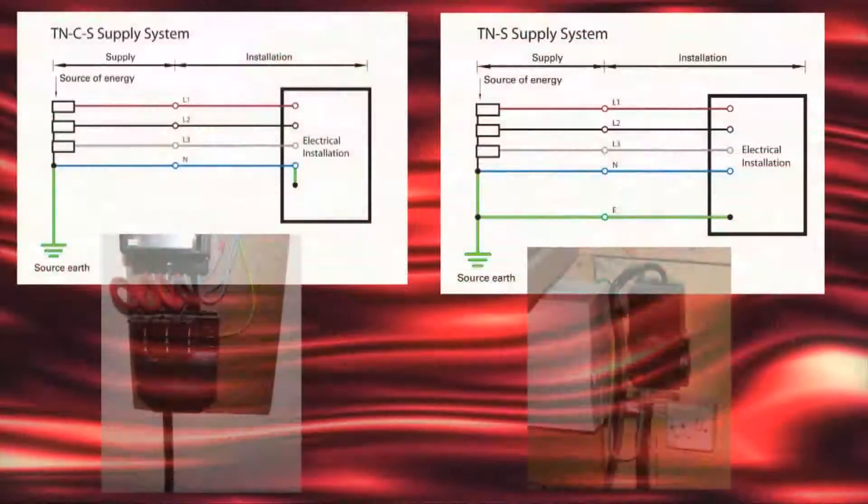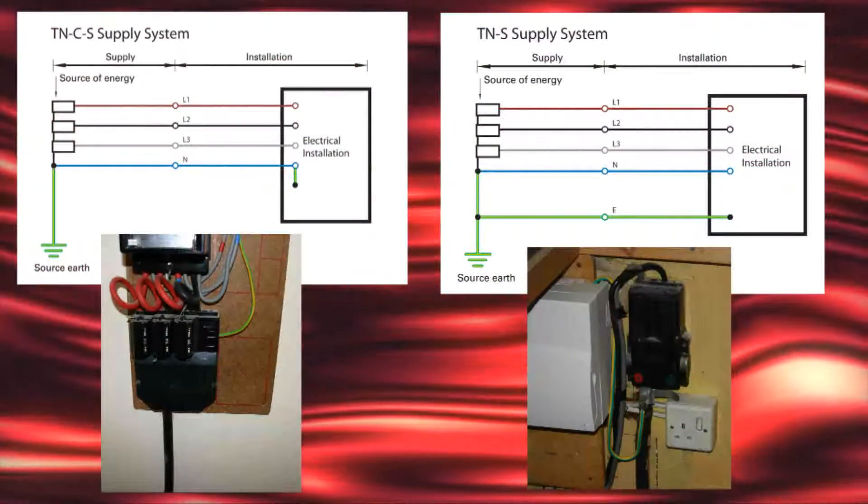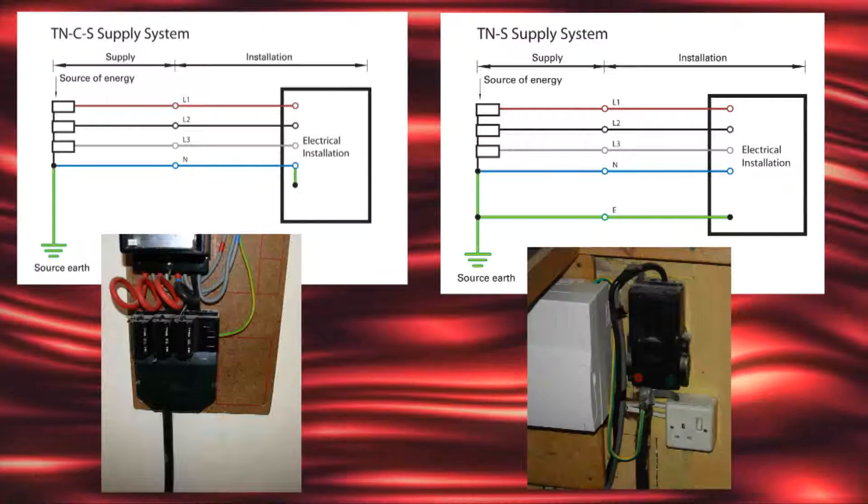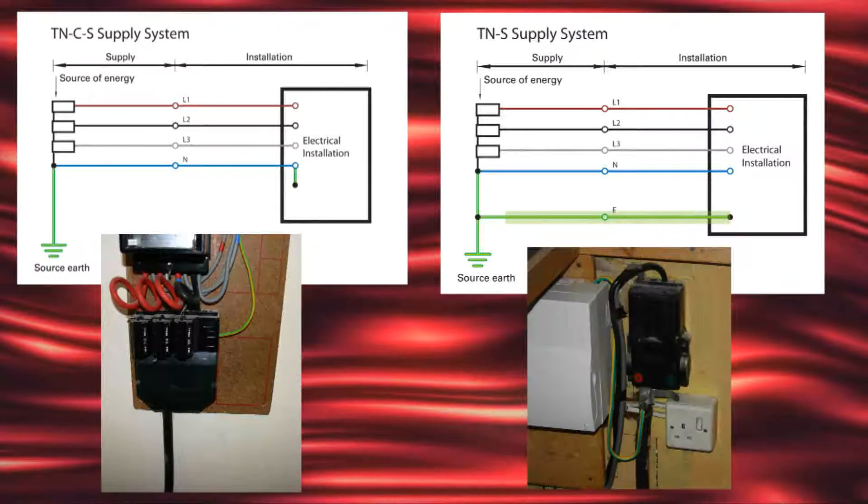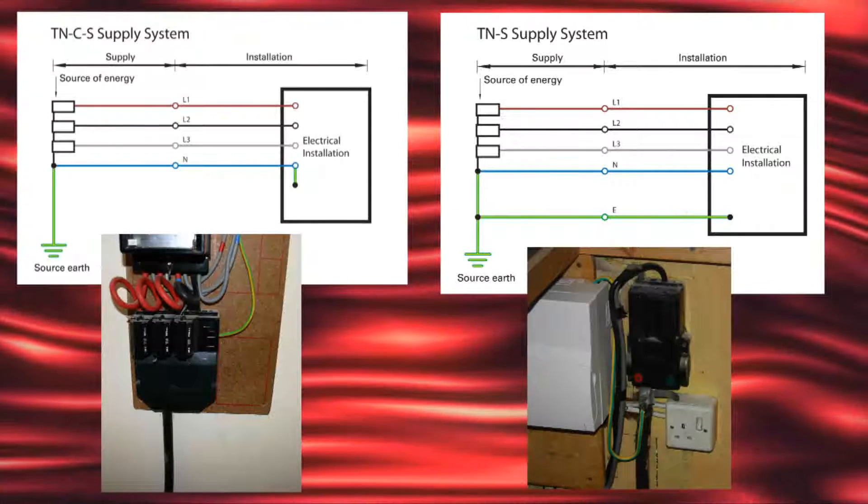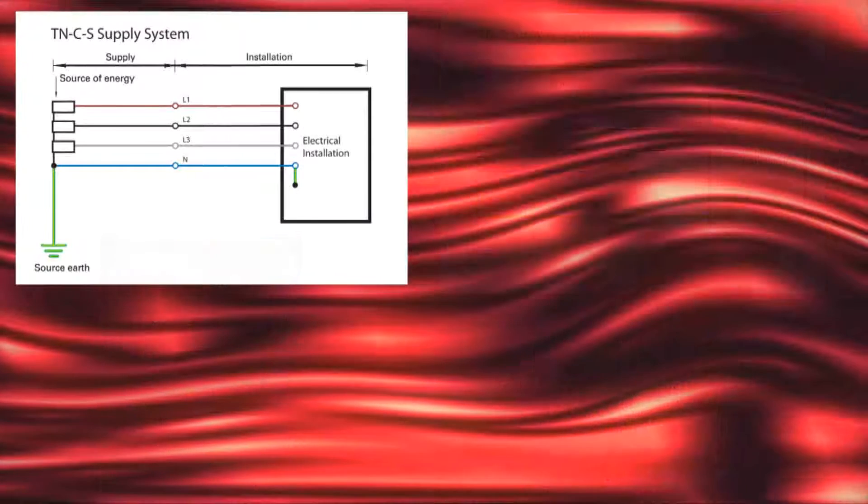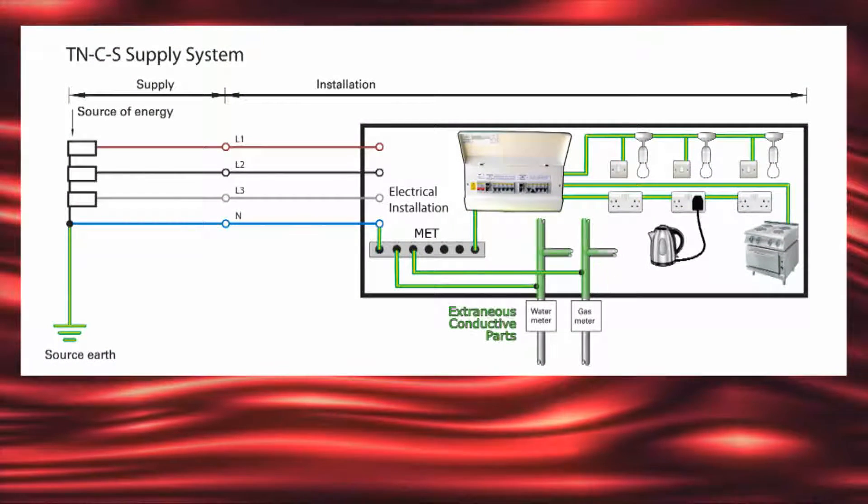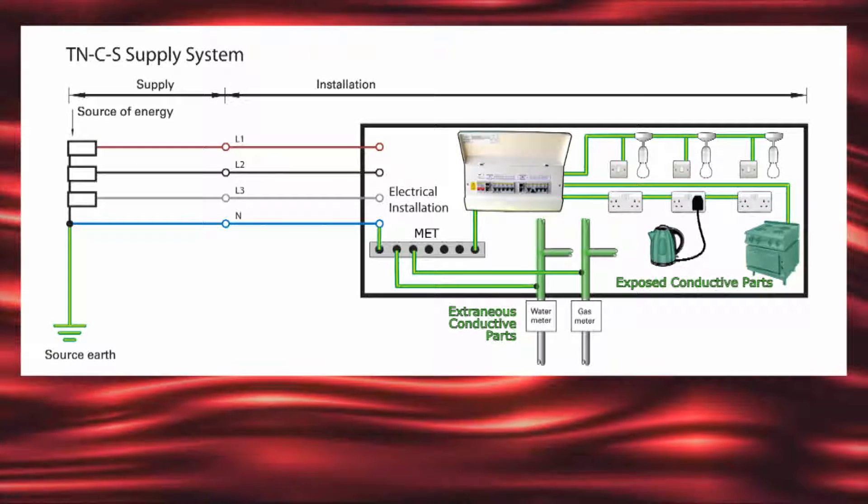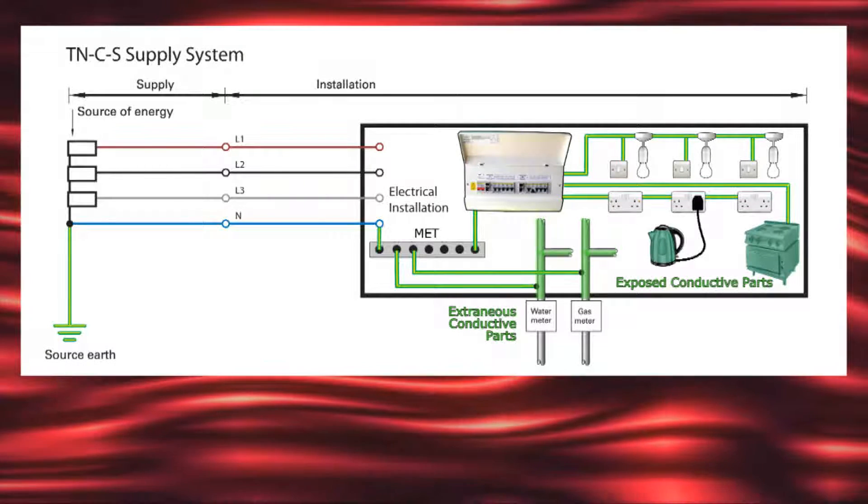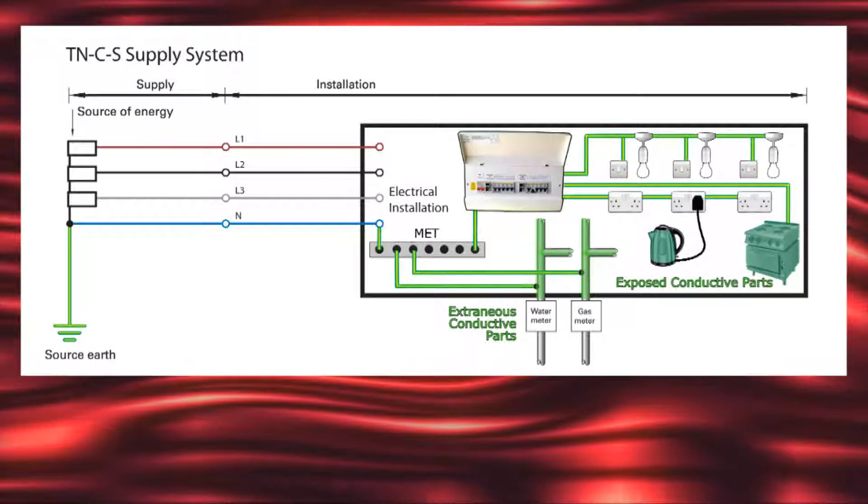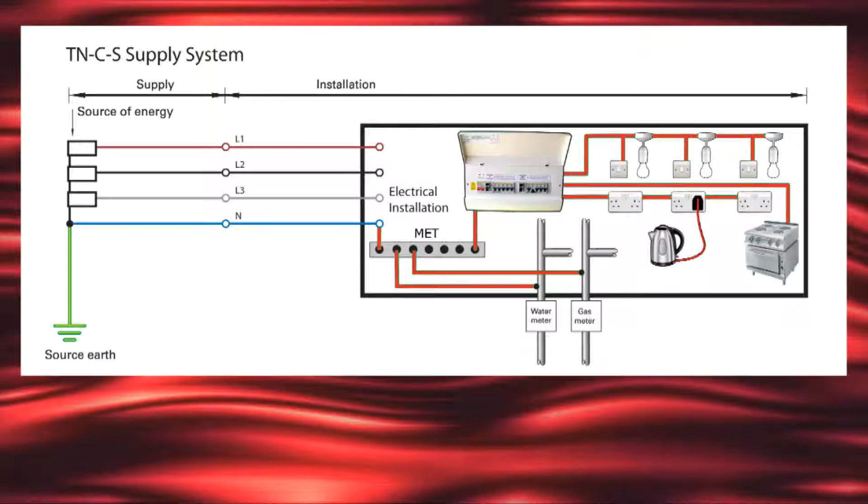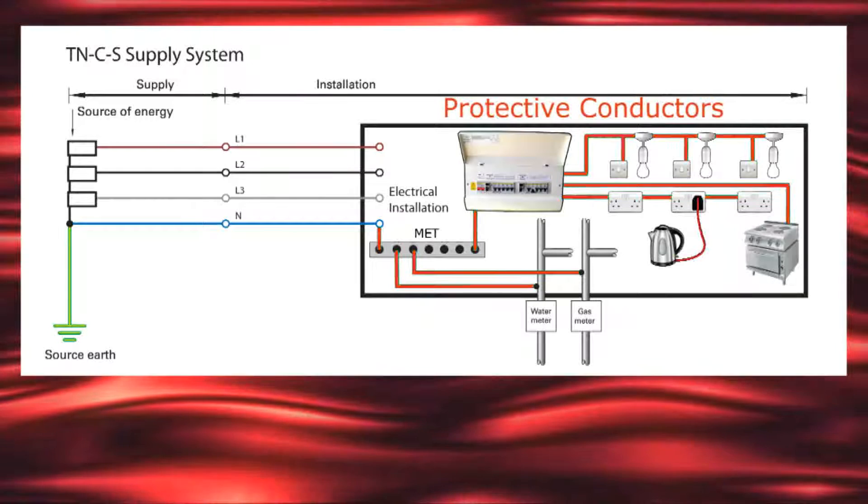TN systems often provide a low impedance path for earth fault currents by adopting either the existing supply neutral conductor in a TN-C-S system, or a separate protective conductor such as the metallic sheath of an armoured cable in a TN-S system. For this to work as a complete protective system, all extraneous and exposed conductive parts within the installation must be connected to the external earthing arrangement. They will then be regarded as being at the same electrical potential as earth. The conductors within the installation providing this connection to earth are known collectively as protective conductors.